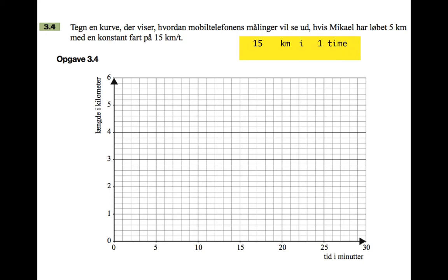15 kilometers per hour, that's 15 kilometers in one hour. If he did 15 kilometers in one hour, then he would be doing five kilometers in 20 minutes. I've just divided everything by three there. So at that speed where he's going 15 kilometers per hour, five kilometers would take him 20 minutes. And we're talking about him running five kilometers. So we need the graph to show five kilometers in 20 minutes. And there it is.